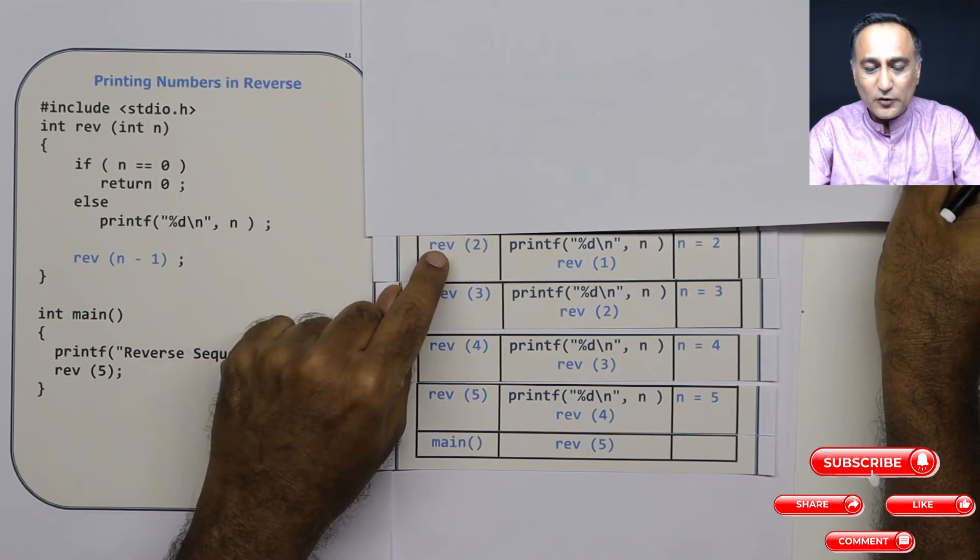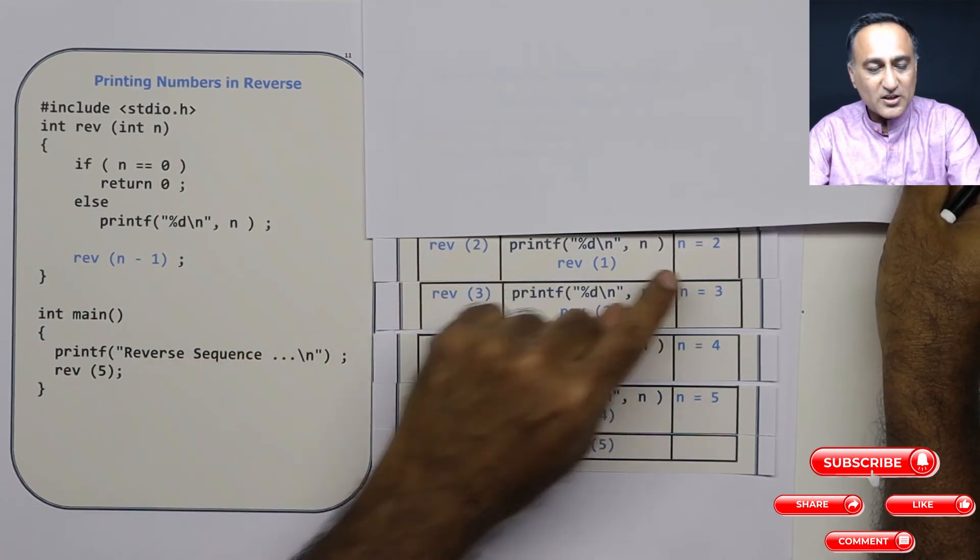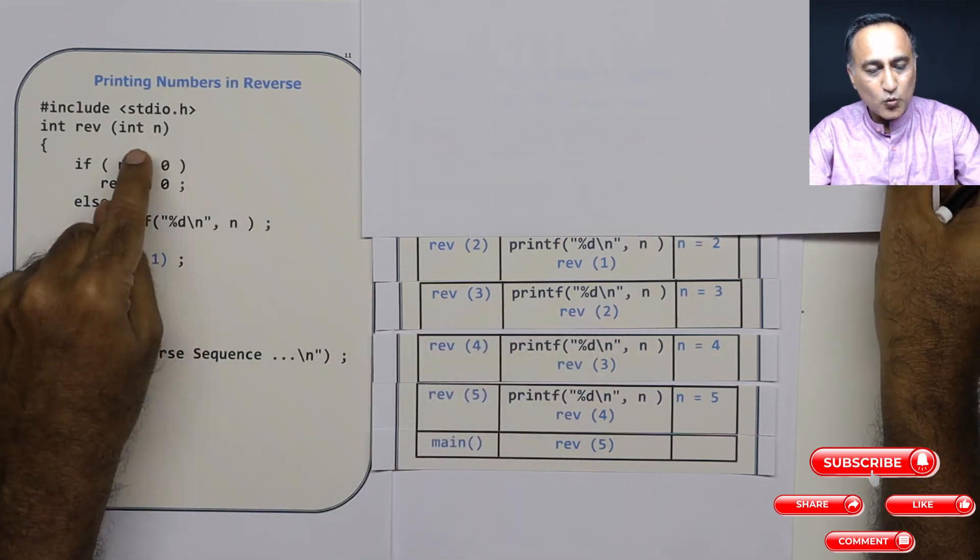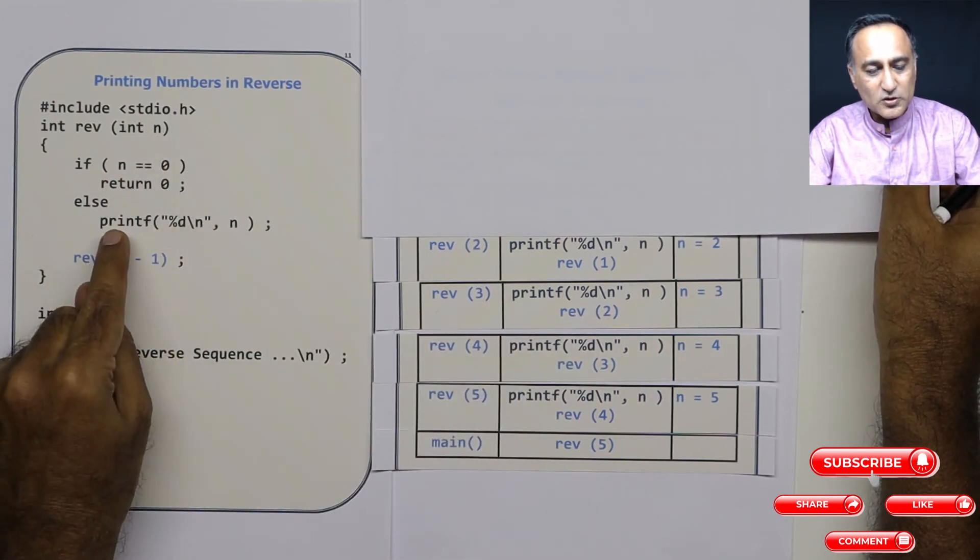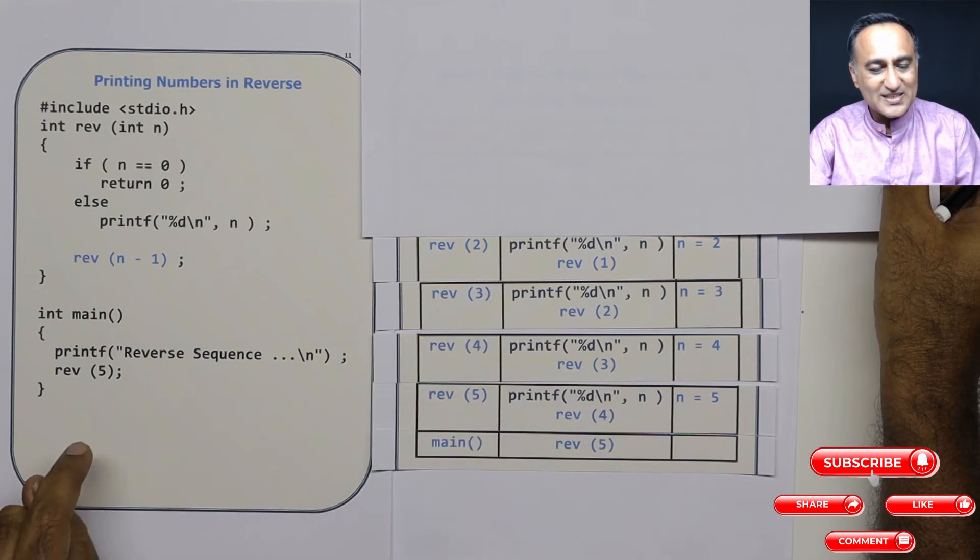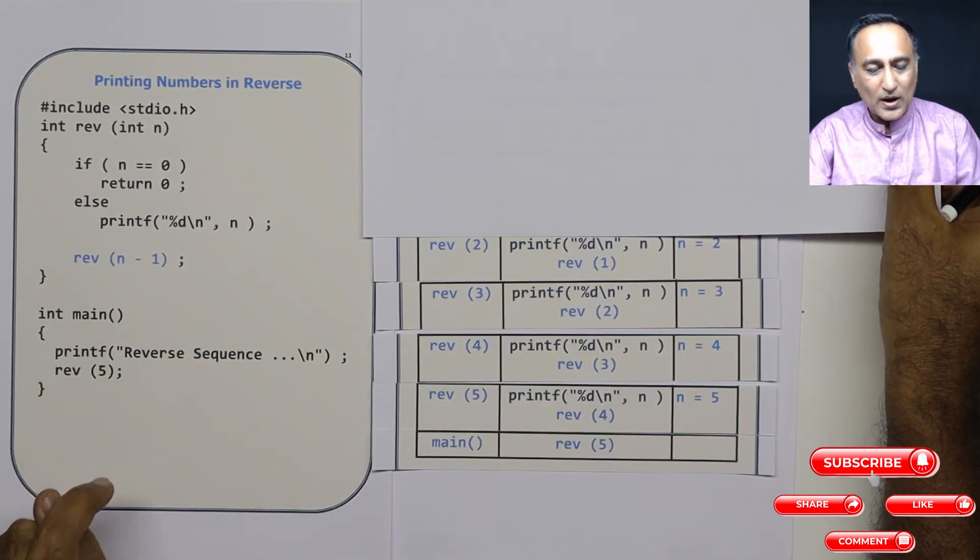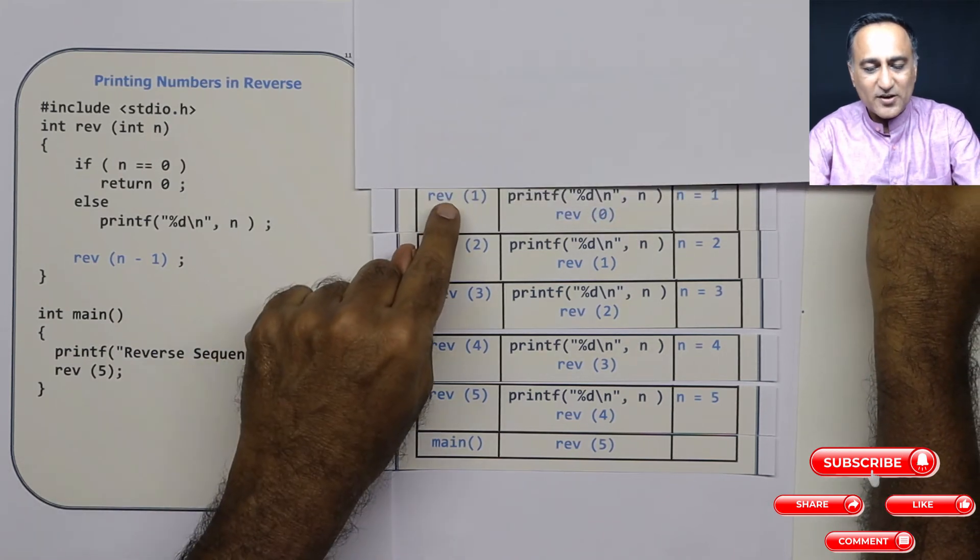Once I go to reverse of 2, n is 2 because the value of n which was passed from here was 2. 2 equal to 0 is false. So I'm printing the value of 2 on the screen. After I print, I'm calling reverse with the value 1. So my next call on the left side, you will see reverse 1.